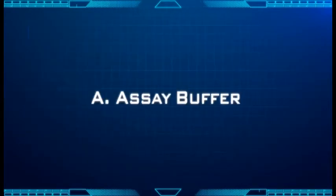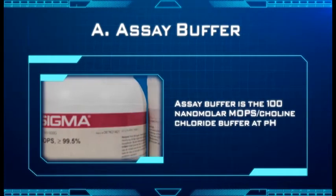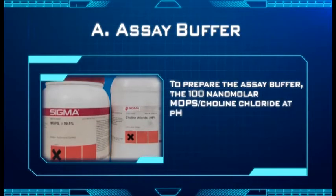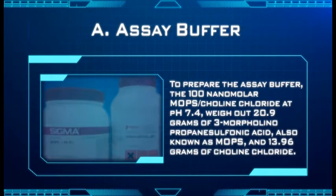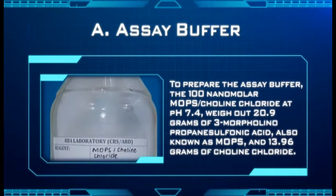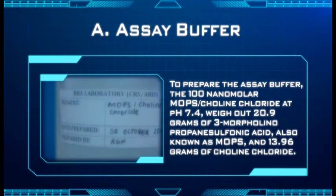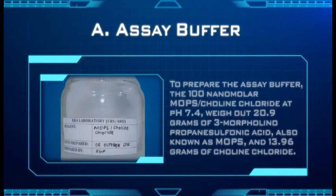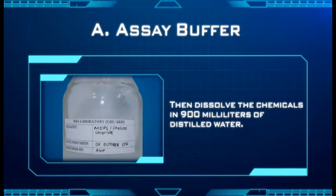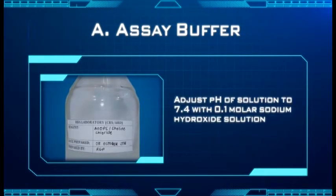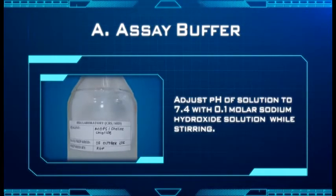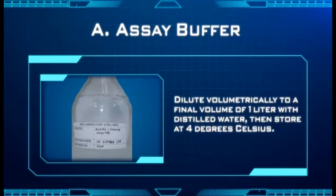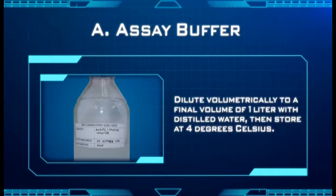A. Assay buffer. The assay buffer is 100 millimolar MOPS choline chloride buffer at pH 7.4. To prepare it, weigh out 20.9 grams of 3-morpholinopropane sulfonic acid (MOPS) and 13.96 grams of choline chloride. Dissolve the chemicals in 900 milliliters of distilled water. Adjust the pH to 7.4 with 0.1 molar sodium hydroxide solution while stirring. Dilute volumetrically to a final volume of 1 liter with distilled water, then store at 4 degrees Celsius.